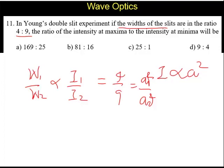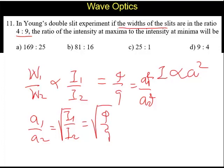A1 by A2 can be easily calculated as the square root of I1 by I2. So the square root of 4 by 9 equals 2 by 3.